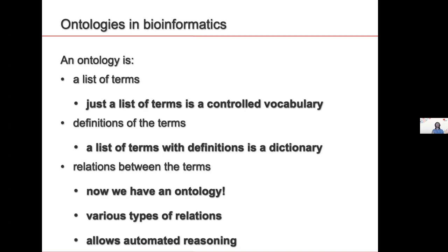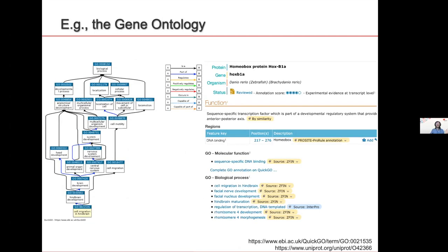The most well-known ontology is the Gene Ontology. It has specific terms with definitions and relations. So 'cell migration in the hindbrain' is a type of cell migration, and is part of hindbrain development — you have different types of relations. All this ultimately is part of biological process. These are used in all databases annotating gene function. For example, here is a UniProt/SwissProt entry from a homeobox gene in zebrafish, with GO terms including 'cell migration in hindbrain'.